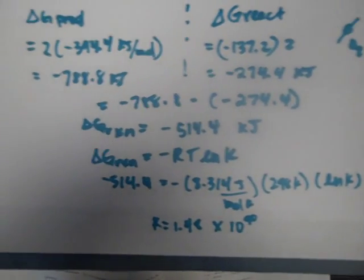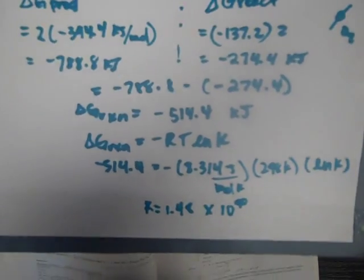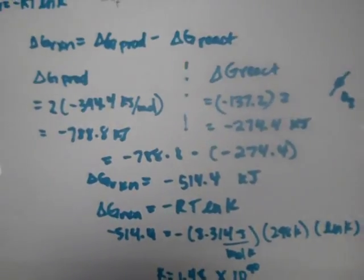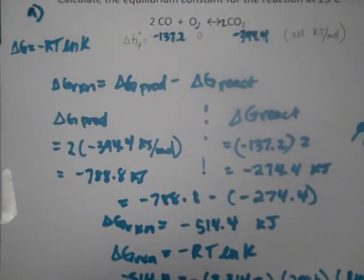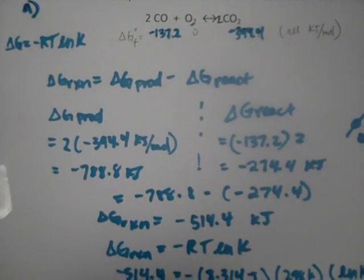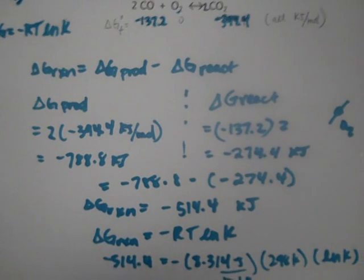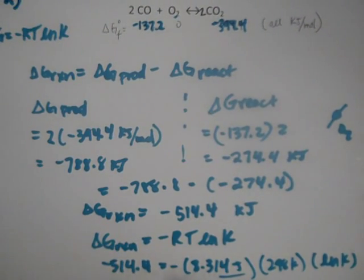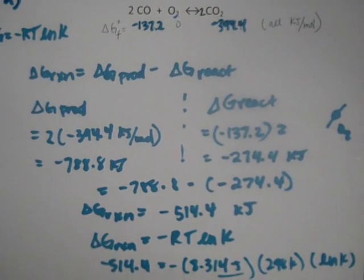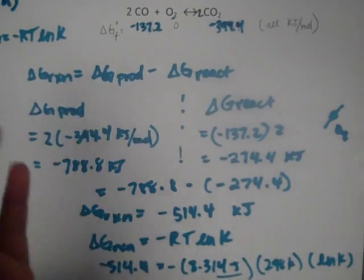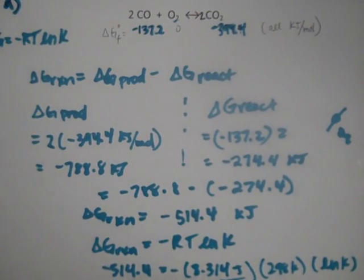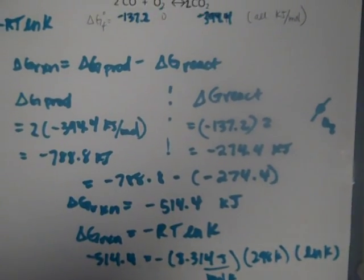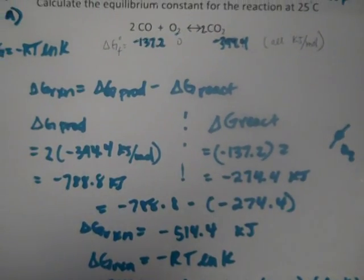To review: we find products minus reactants to get delta G, then use delta G equals negative RT natural log of K to find K. He could also give you K and you'd just plug in to find delta G. Two options to work on this problem — and don't forget your negative signs.